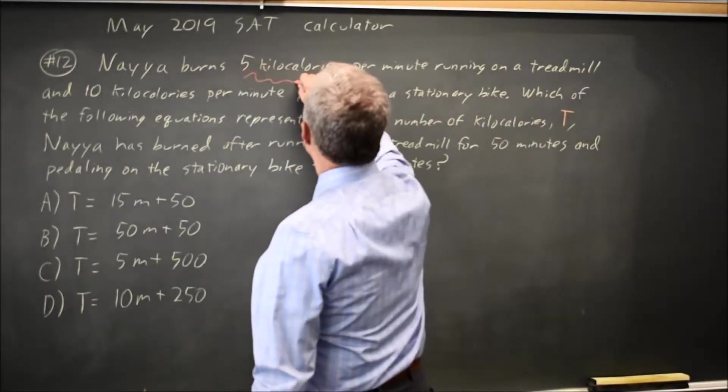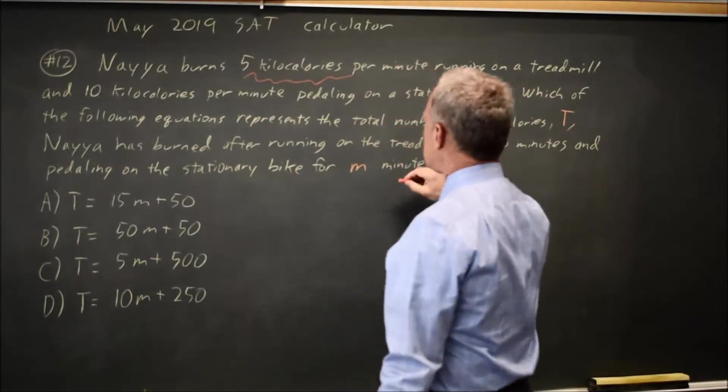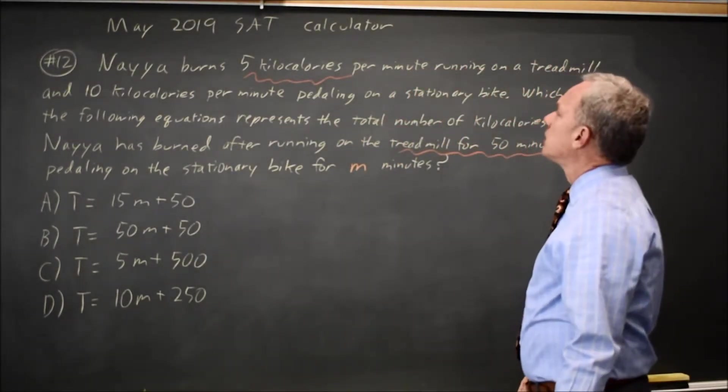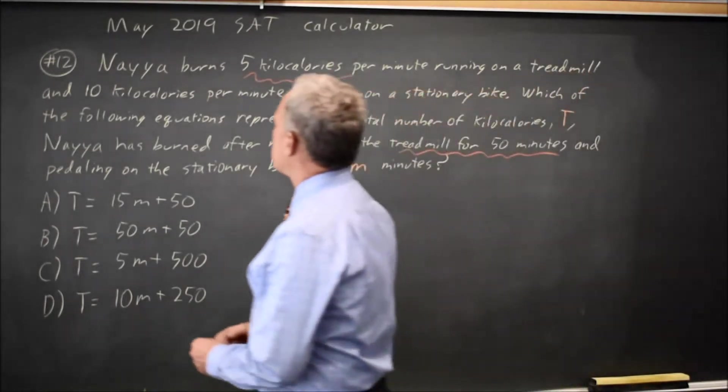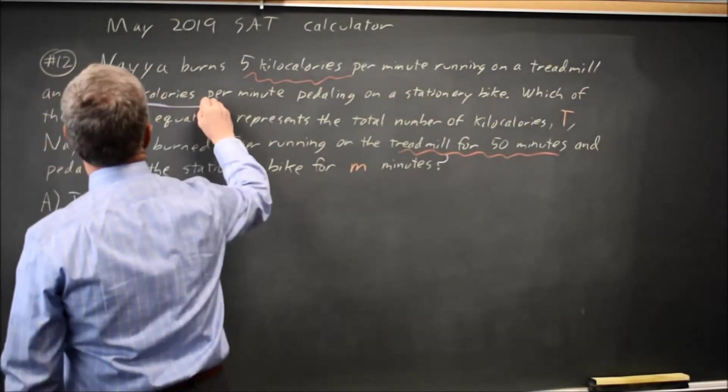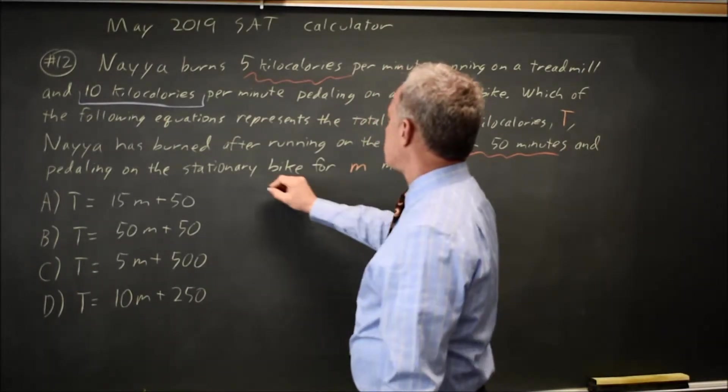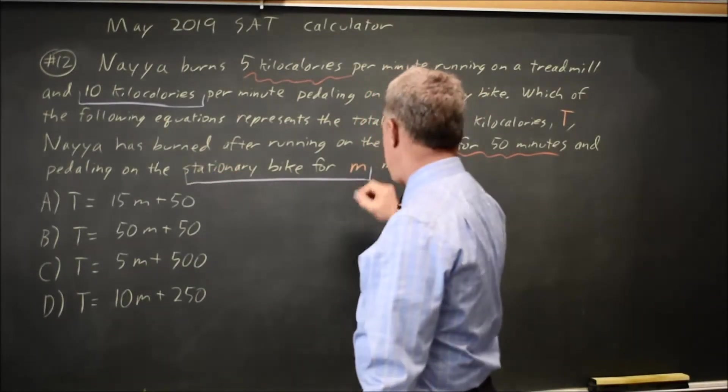Naya burns 5 kilocalories per minute on a treadmill, and she runs on the treadmill for 50 minutes. And Naya burns 10 kilocalories per minute on the stationary bike, and she's on the stationary bike for N minutes.